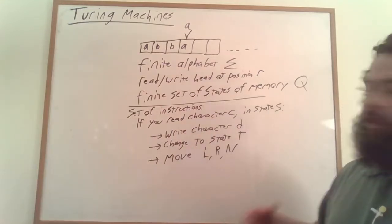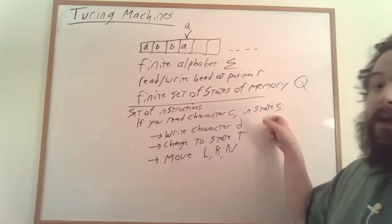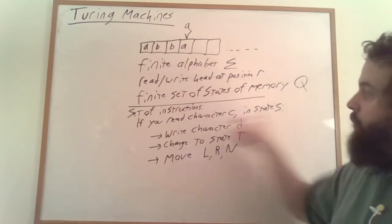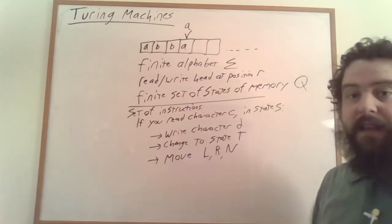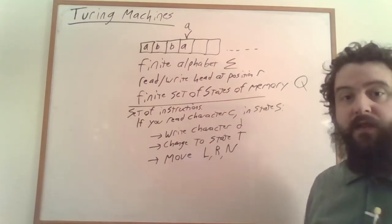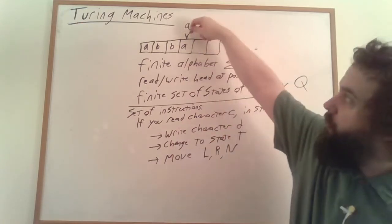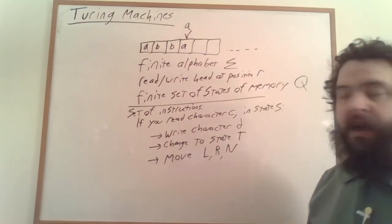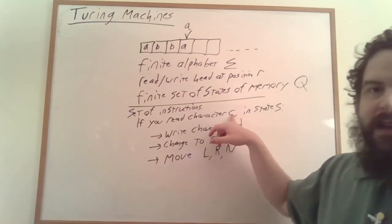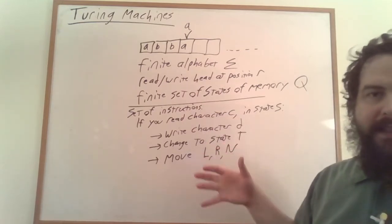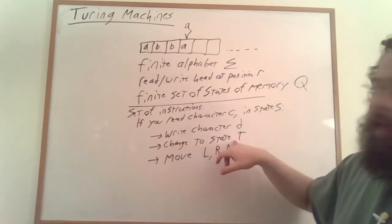We then have a set of instructions for how to advance the Turing machine forward in time. These instructions specify what to do if you read a particular character and are in a particular state. Of course there's only finitely many characters and finitely many states, so there's only finitely many instructions. It indicates that we should write a character to the current read-write head position — you could just have this be the same character if you don't want to write anything at that position — and it says to change to another state.